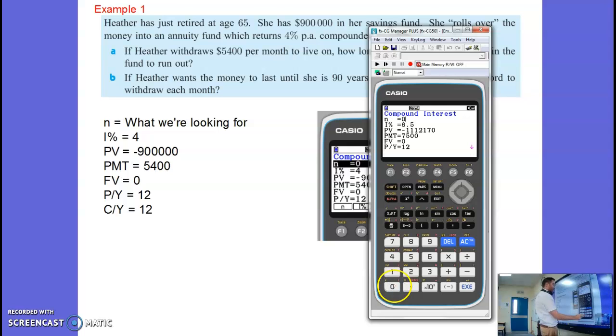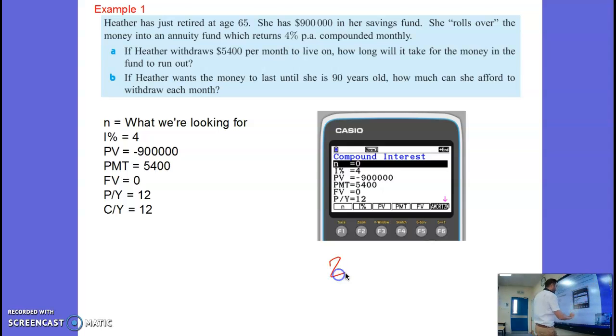And when we type that in we should find that we get, let's do it on the calculator now. So we've got 0 and 4 and negative 900,000 and 5,400 and 12 and 12. Okay. I'm looking for N so I'm going to go F1 and it says 243.68. 243.68. So it takes that many months for the payments to run out.